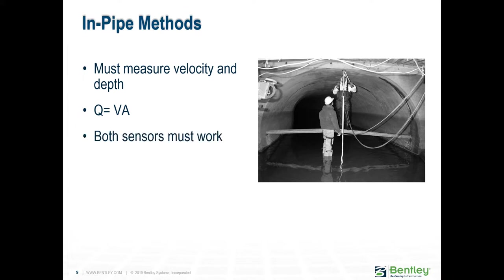The Palmer-Bowlus flumes are especially useful in sewer flow monitoring in that they can be constructed in existing circular pipes. In the case of full pipe flow, only the average velocity needs to be measured as the cross-sectional area remains constant for a given pipe. In some cases, individuals attempt to measure depth of flow in a pipe and then attempt to determine flow from an equation such as the Manning formula.